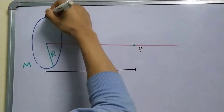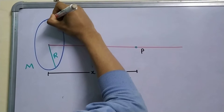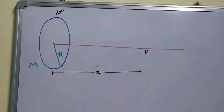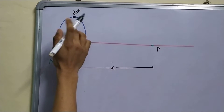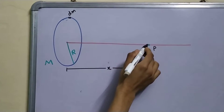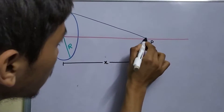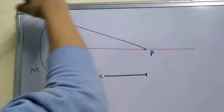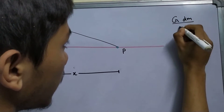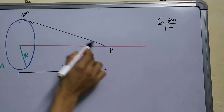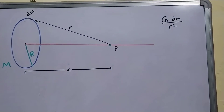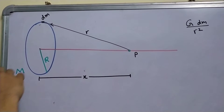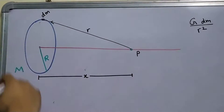Our technique will be to divide this ring into very small pieces, each having an infinitesimal mass dm. So these dm's — these very small masses — will each create a field at point P. The magnitude of this field will be G·dm divided by r², where r is the distance. After calculating the field for each small mass, we integrate all these contributions to find the net field.